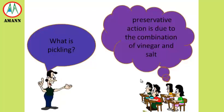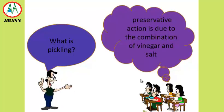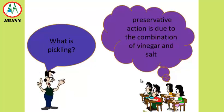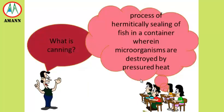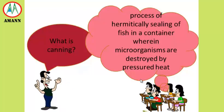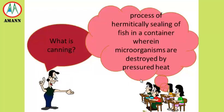Pickling is one of the processes of fish curing wherein preservative action is due to the combination of vinegar, sugar, salt, and spices. Canning is the process by which fish is placed in a hermetically sealed container wherein microorganisms are destroyed by high-pressured heat, producing a commercially sterilized product that is shelf-stable for several months.